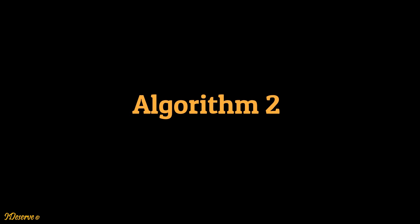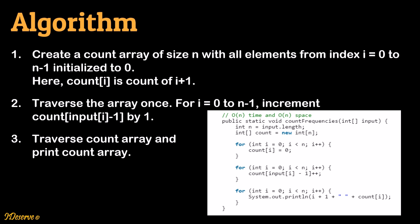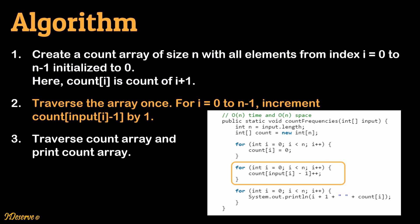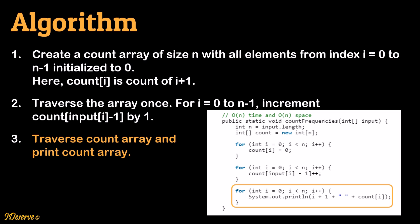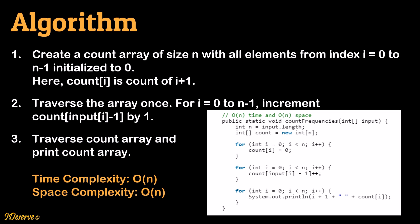Let us discuss the second algorithm, which is a better approach. We traverse over the input array once and store the count of each element in a count array. First, create a count array of size n with all elements initialized to 0, where count of i denotes count of i plus 1. Then for i equal to 0 to n-1, increment count of input[i] minus 1 by 1. Finally, traverse and print the count array. Time and space complexity of this algorithm is O(n).